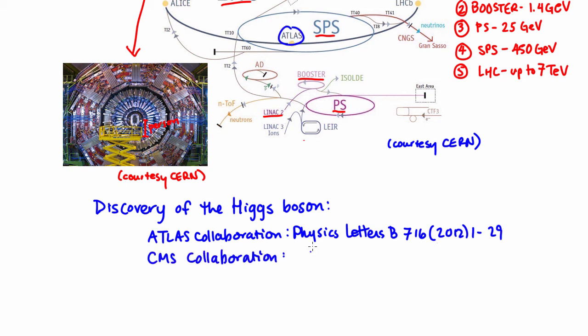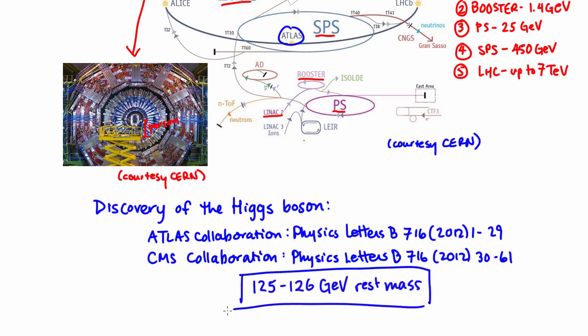In August, they made the announcement official by publishing two papers. These papers, the accumulative work of thousands of people in many nations, provided experimental evidence of the discovery of the Higgs boson, and made it possible for Higgs and Englert to receive the Nobel Prize in Physics in 2013.